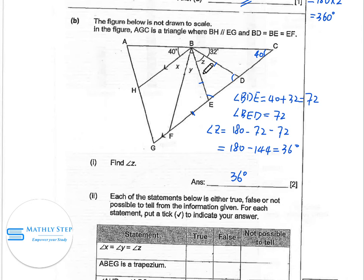Actually, from this information, we couldn't tell because this point F is, you can shift this point F to here to here without changing all these angles. So X, Y actually can be of any degree. So this is not possible to tell from the information.